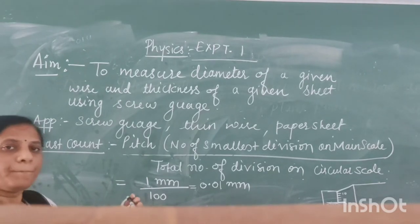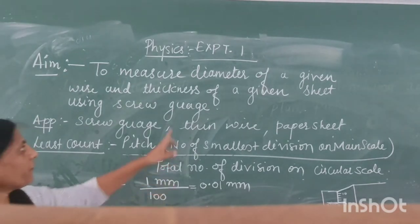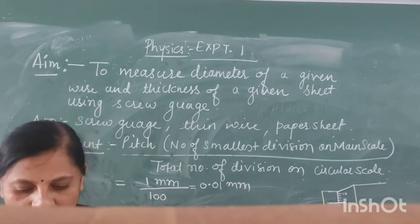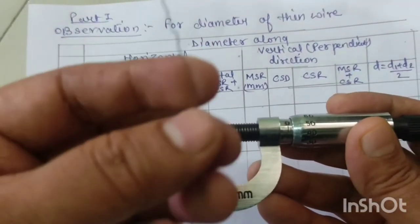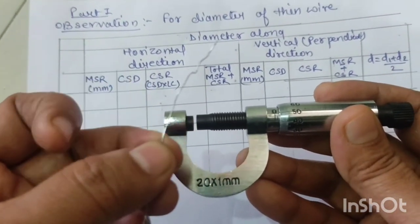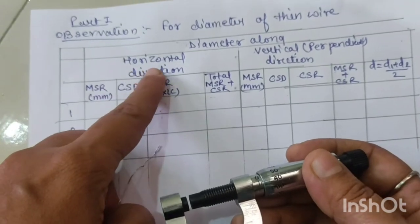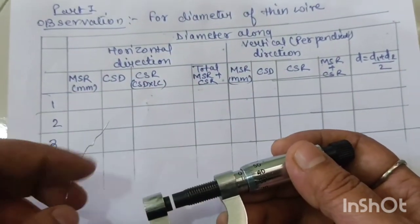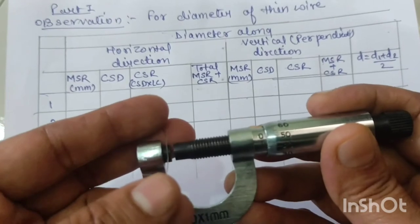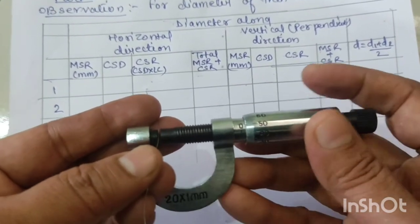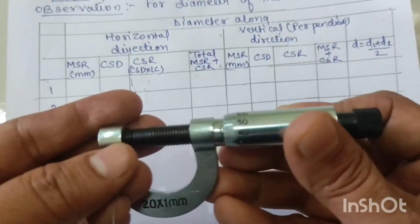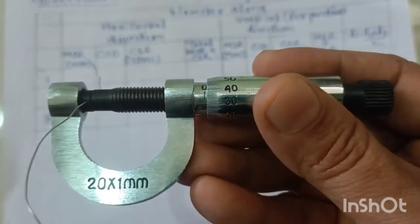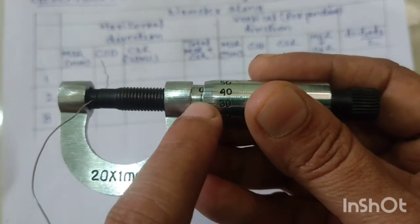Now let's do the practical. We have taken a thin wire and we'll find out its diameter. The observation table says we have to take the diameter along the horizontal direction as well as the vertical (perpendicular) direction. Keeping the wire along the horizontal direction and rotating the circular scale, we check the MSR. The MSR (main scale reading) is 1 mm, and the circular scale division (CSD) coinciding is 40.